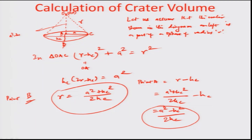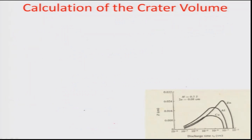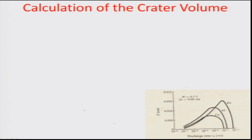So point A is at a distance of (A² − Hc²)/(2Hc) from O, and point B is at a distance of (A² + Hc²)/(2Hc) from O. We are trying to find the crater volume based on the variation of the crater from point A all the way to point B.